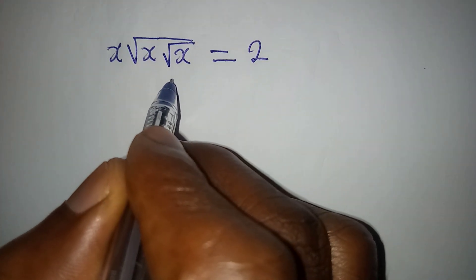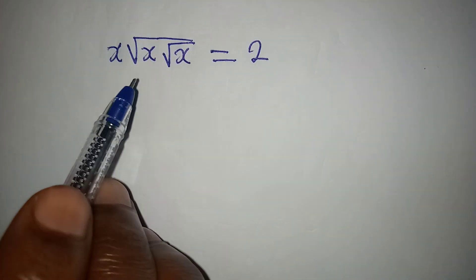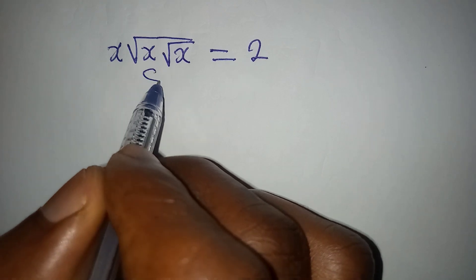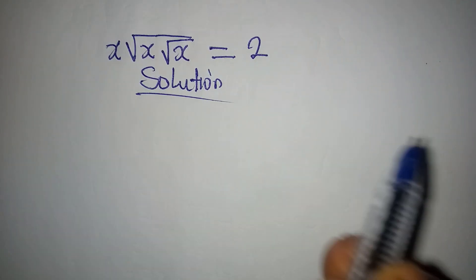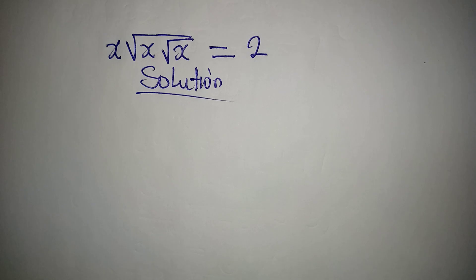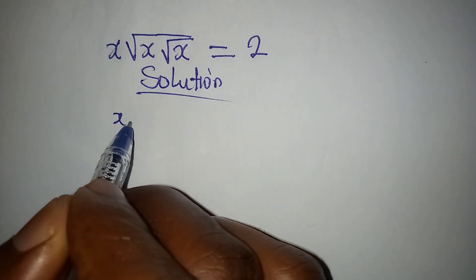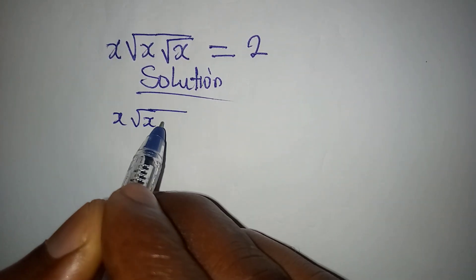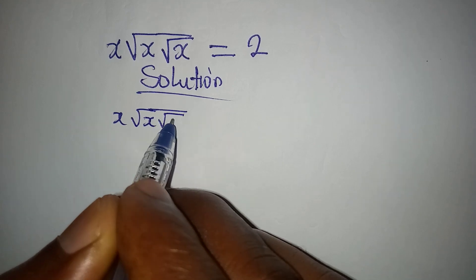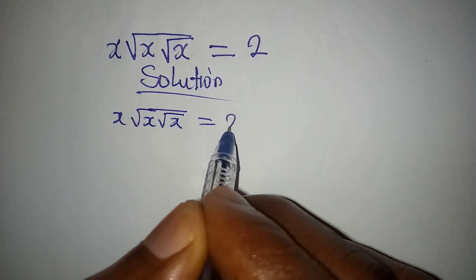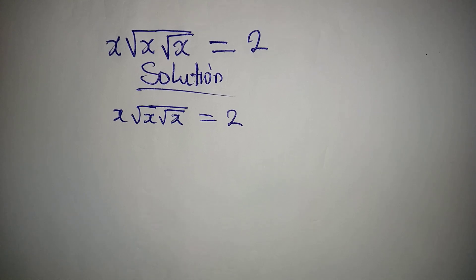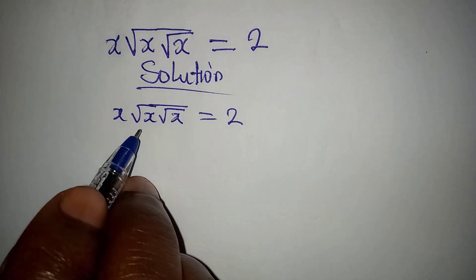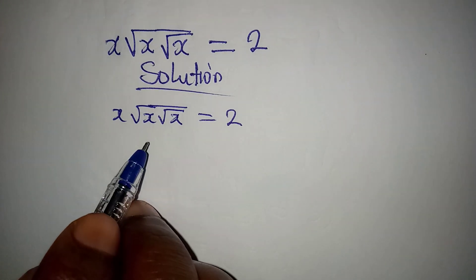Hello everyone. Let's provide a solution to this problem. We have x times the square root of x times the square root of the square root of x, equal to 2, and we are looking for the value of x. I want us to use this method — it's a very fast method.